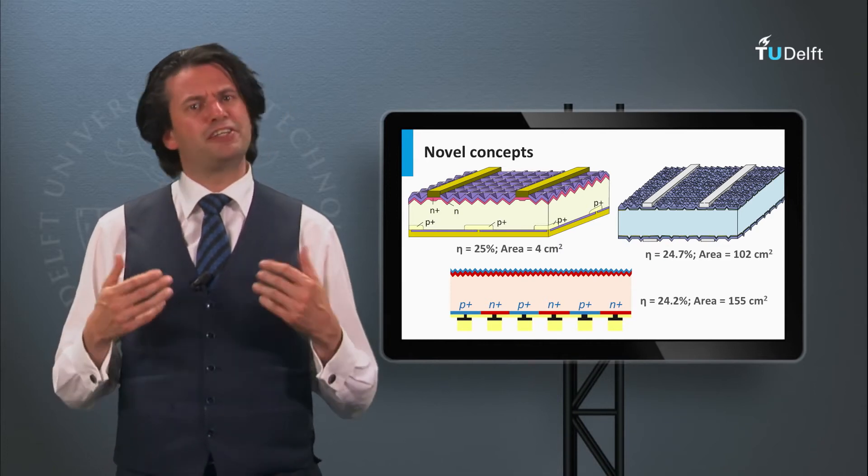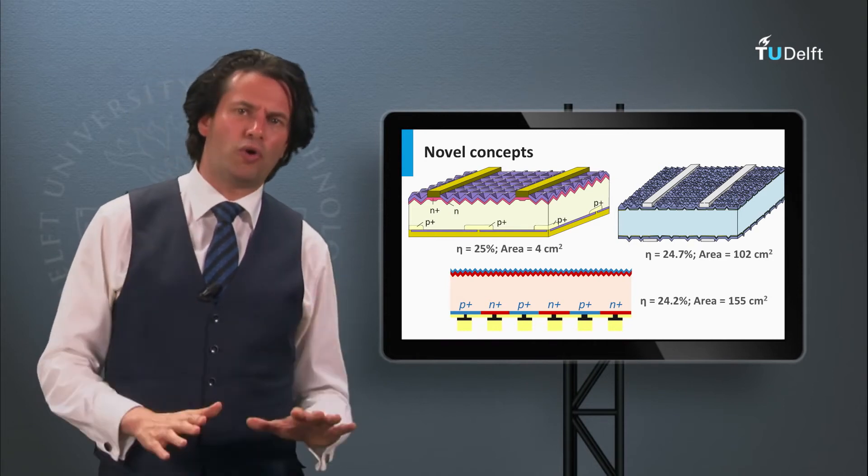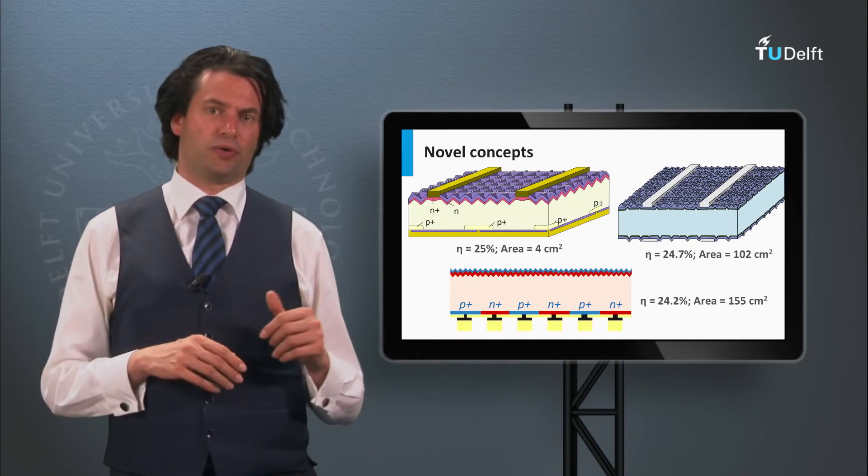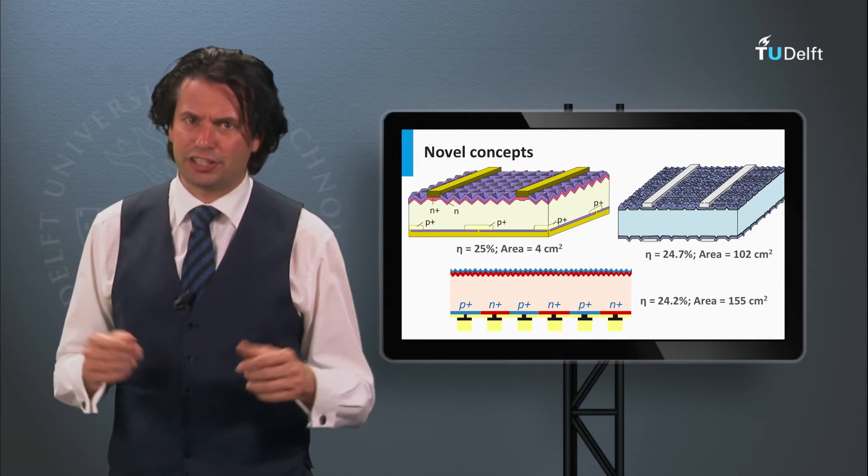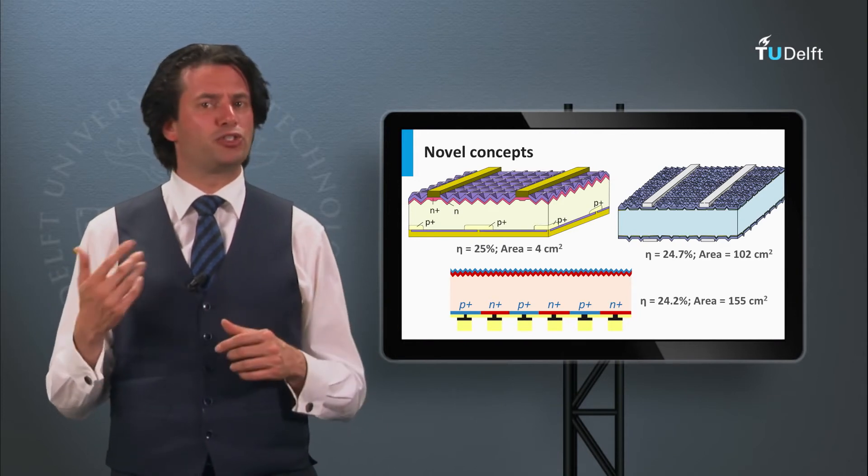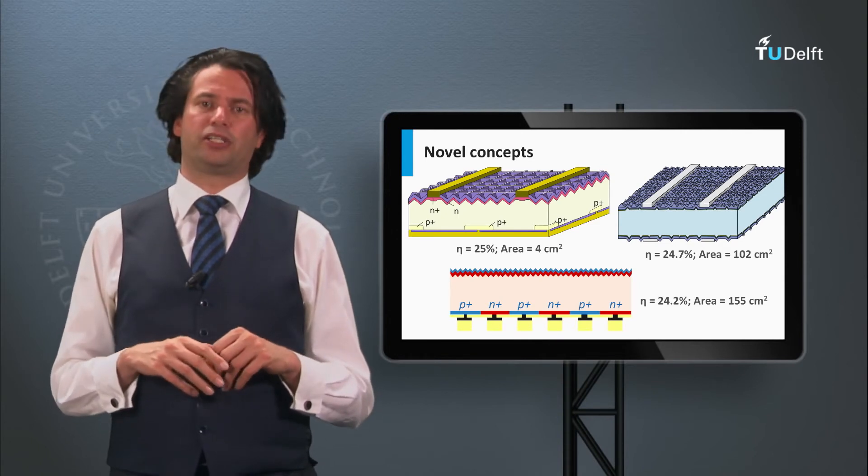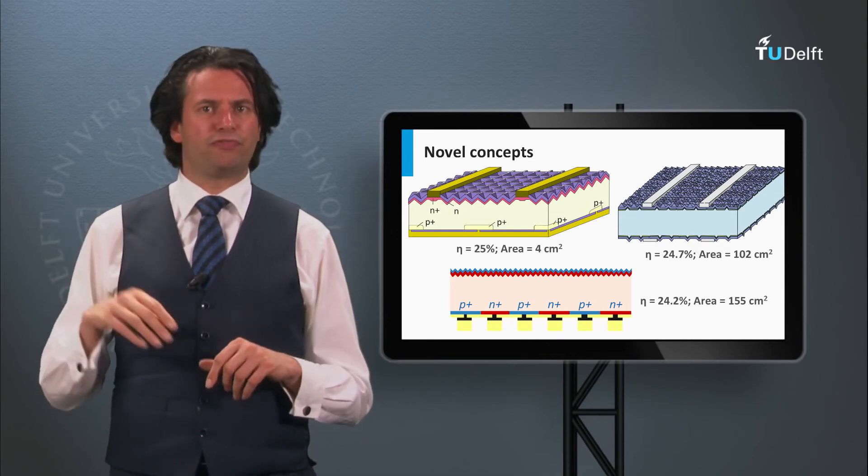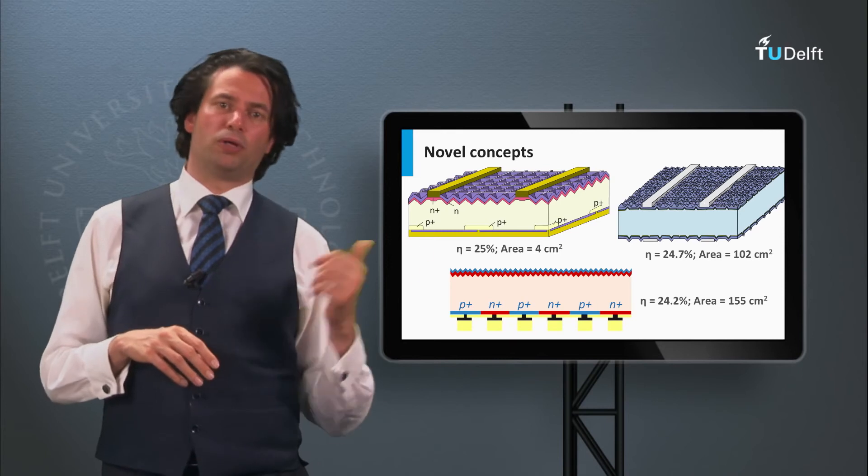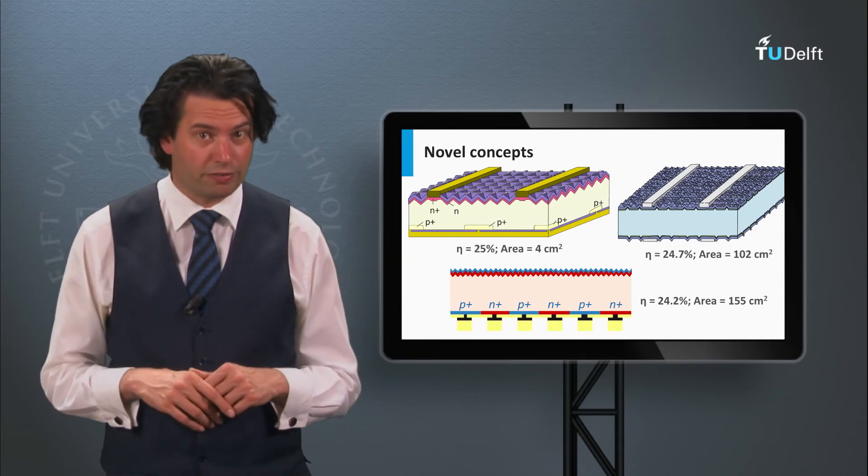The efficiency for multi-crystalline silicon solar cells are lower as the wafer quality is lower. The best efficiency achieved is 19.5 by Q-cells on a wafer with a size of 243 square centimeters. This is about 5 percent absolute below the record efficiencies based on monocrystalline silicon wafers.